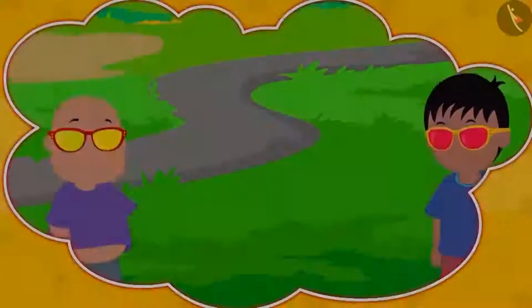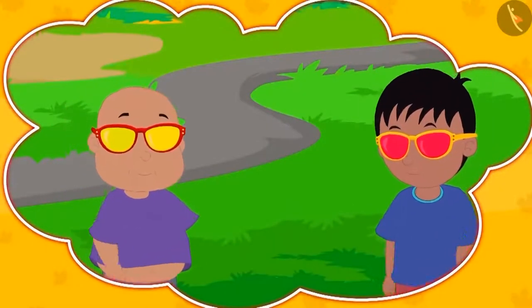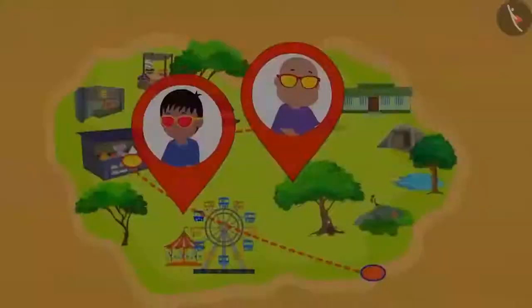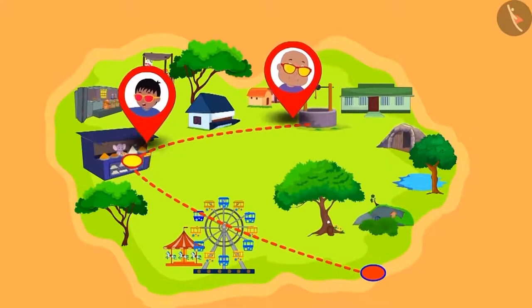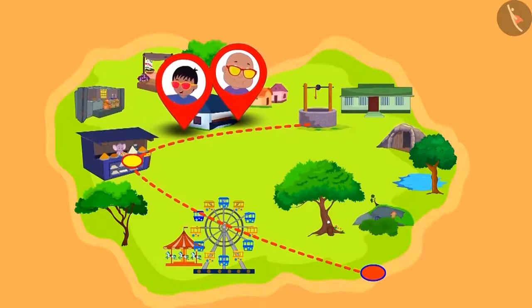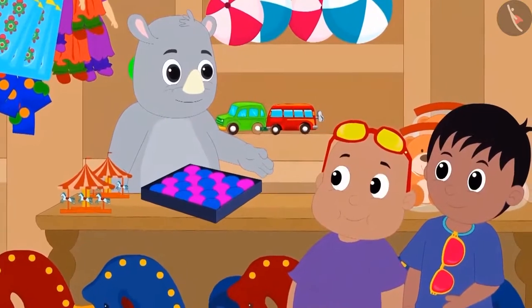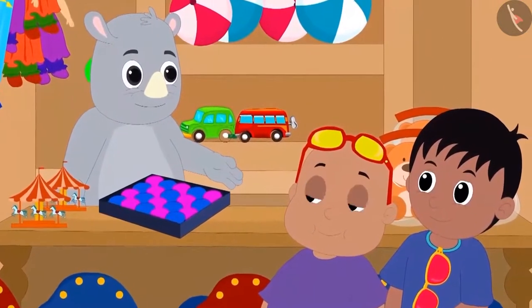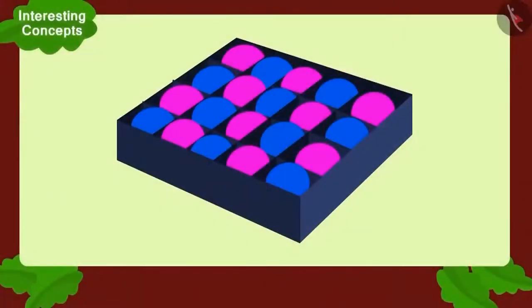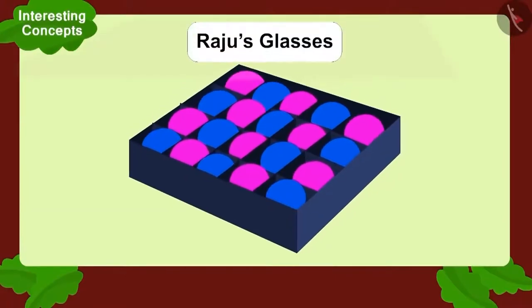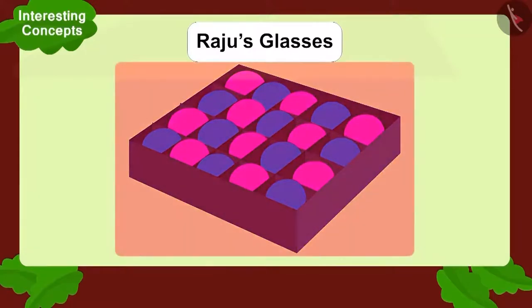Do you remember the Raju's and Bablu's magical glasses? Today, once again, they wore their glasses and moved out to have some fun. Come, let's see what they see through their glasses. First, Raju and Bablu have arrived at Gaggu Rhinos toy shop. There is a box of balls there. In the box, the balls are placed in four vertical and five horizontal compartments.